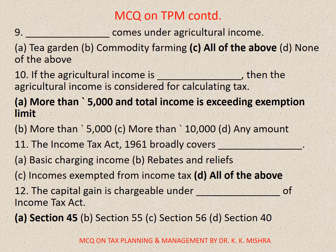Question number 11: The Income Tax Act 1961 broadly covers — A. Basic charging income, B. Rebates and reliefs, C. Incomes exempted from income tax, D. All of the above. The correct option is D. All of the above.